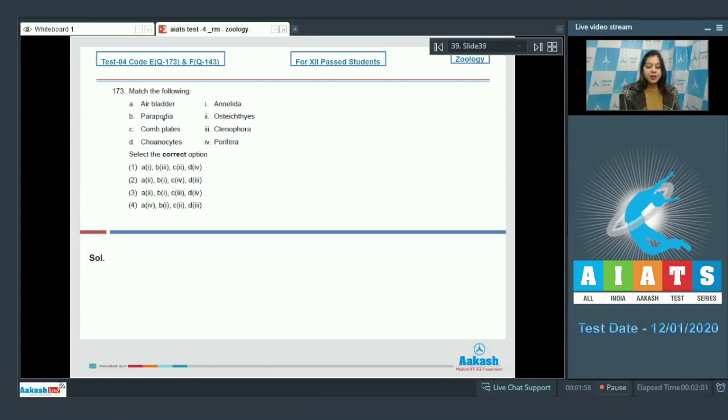Question number 173. Match the following. Air bladder, Parapodia, comb plates and coenocytes. Air bladder is a characteristic feature of osteichthyes. Air bladder is filled with air and it helps to keep the fish afloat.